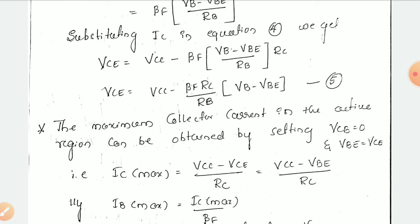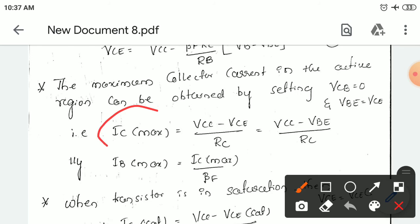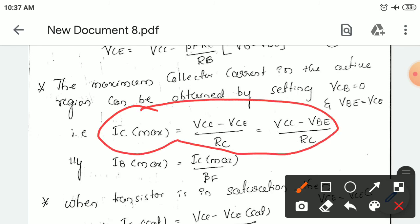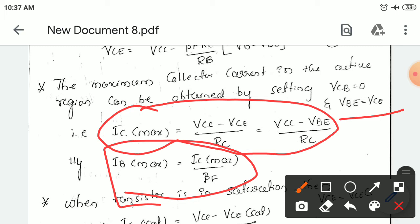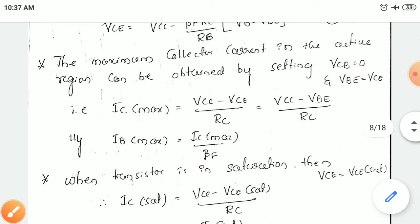The maximum collector current in the active region can be obtained by setting the collector base voltage to 0. When the collector to base voltage is 0 and base emitter voltage equals collector emitter voltage, you get the maximum collector current. IC max = (VCC minus VCE) divided by RC, applying KVL. Here VCC minus VBE divided by RC. Similarly, IB max = IC max divided by beta F.